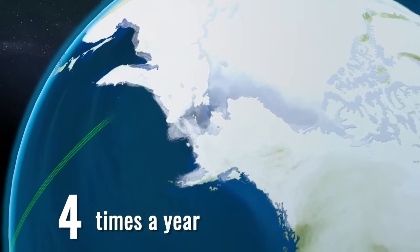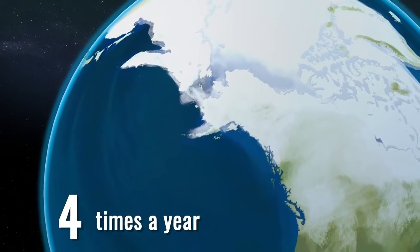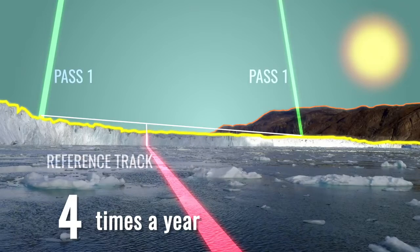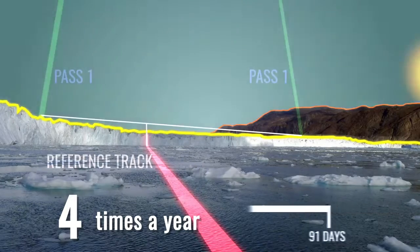Four times a year, every 91 days, ICESat-2 will measure the same ground tracks, allowing scientists to see how glaciers and other frozen features change with the seasons,